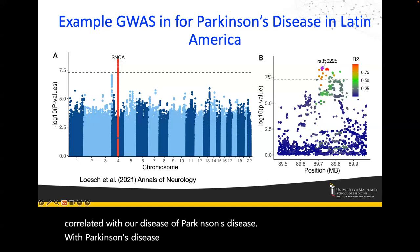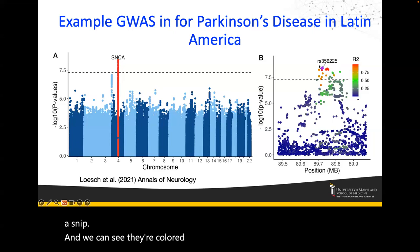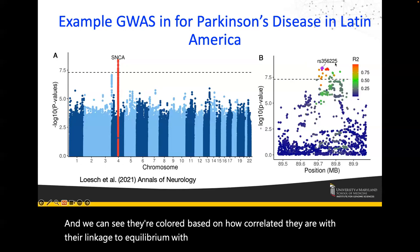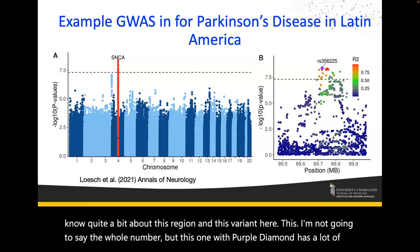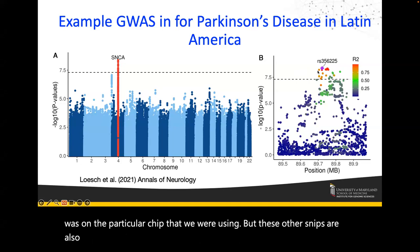We can zoom in on that particular region. Each dot here represents one statistical test of a SNP, colored based on how correlated they are through linkage disequilibrium with each other. It turns out we actually know quite a bit about this region — one variant, marked with a purple diamond, has a lot of evidence building that it is the actual causal variant. These other correlated SNPs are also being identified, and we can start digging into what those things might mean.